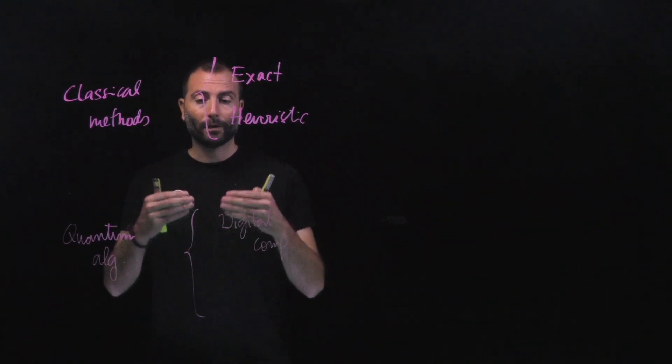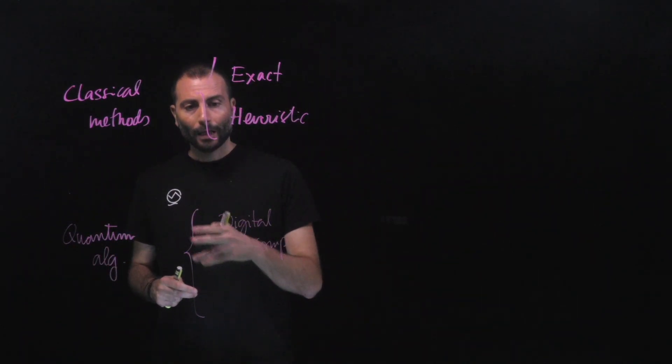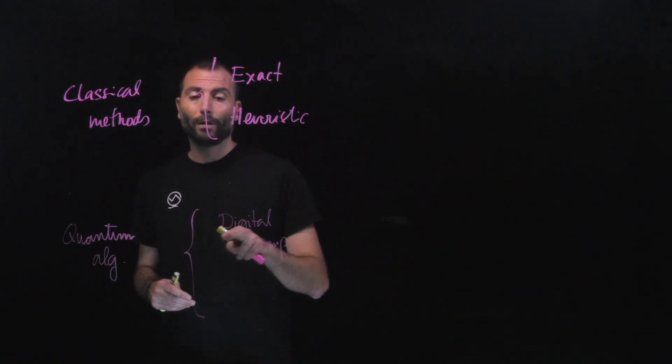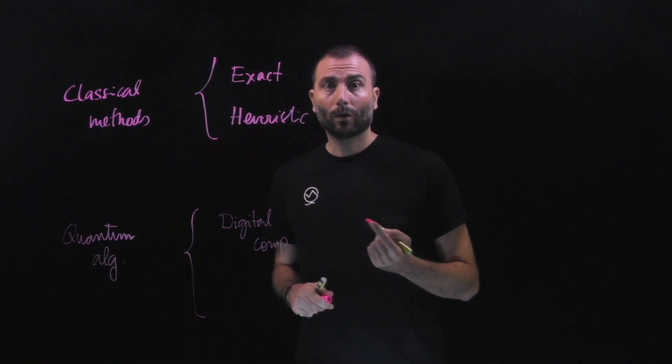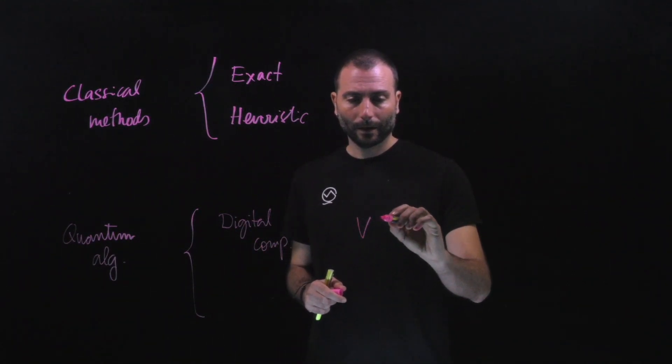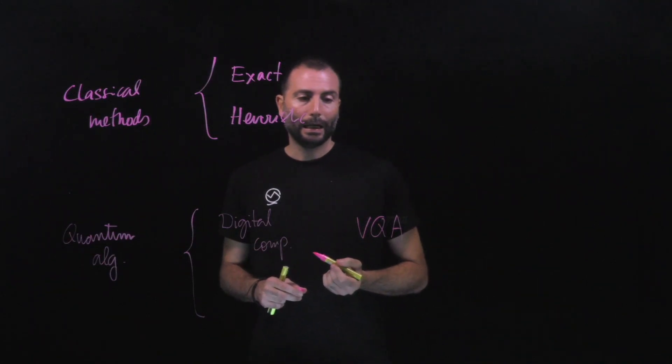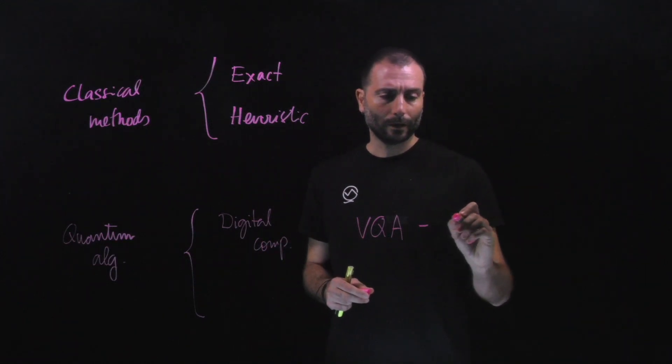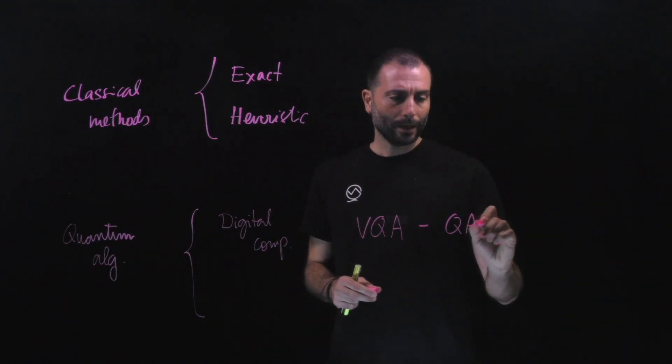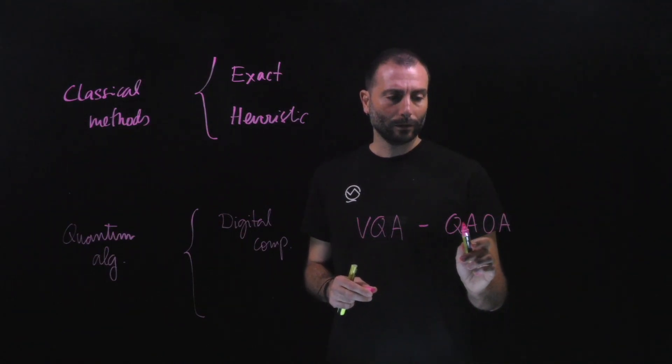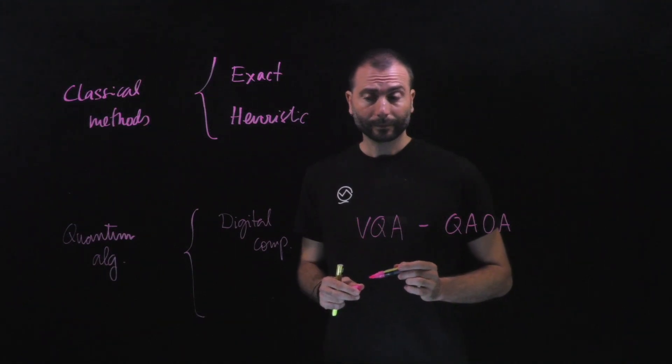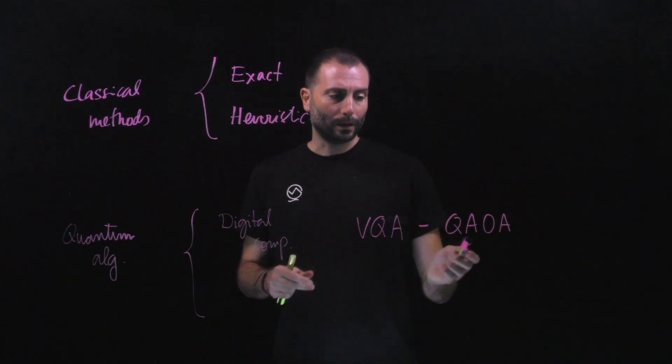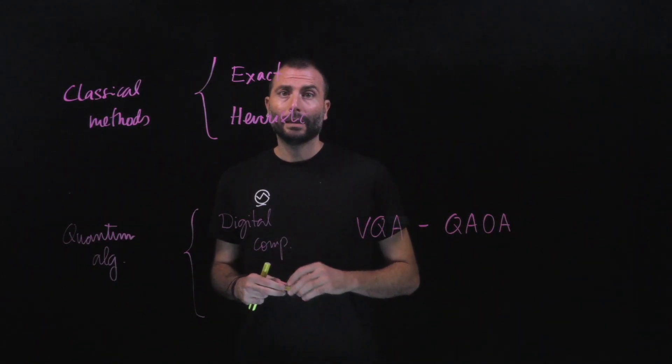The most popular algorithms that solve optimization problems with digital computers are the variational quantum algorithms, VQA, and its most popular example that you have a lecture about it is the so-called QAOA, that stands for Quantum Approximate Optimization Algorithm. The presentation of the VQA and QAOA as a particular example of VQA will take place in lectures six and seven.